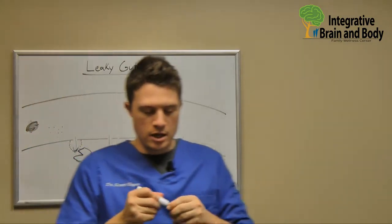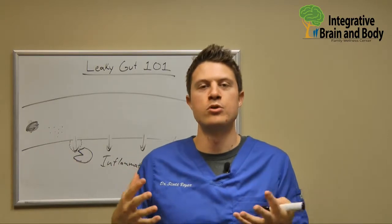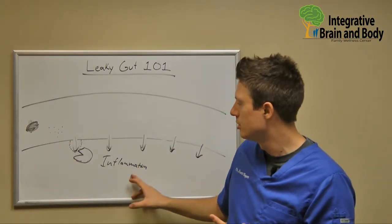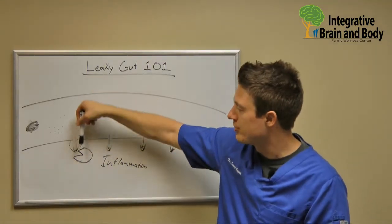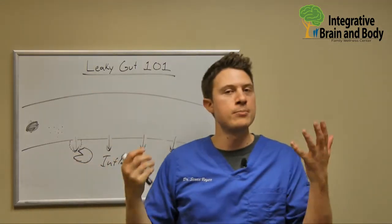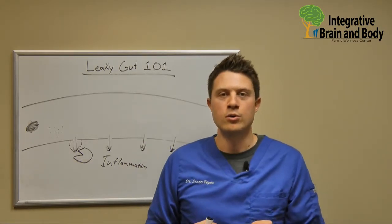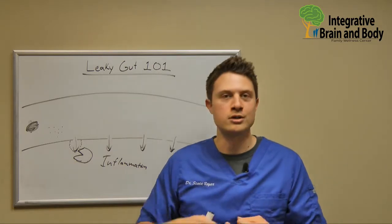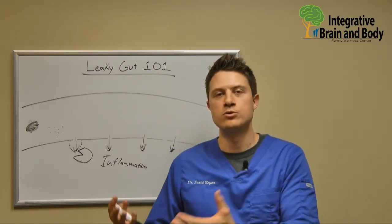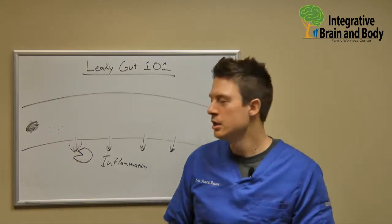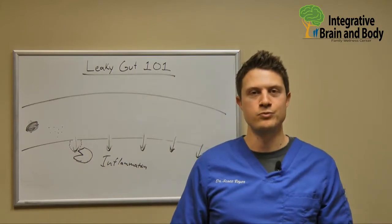Inflammation and immune system function — you cannot have one without the other. Inflammation is a weapon that our immune system uses to prevent a particle — whether that be a virus, bacteria, an undigested food particle, or a dead tissue cell — from getting deeper and deeper into the system. If it gets into our body where it doesn't belong, our immune system has to clean it up using this weapon called inflammation.